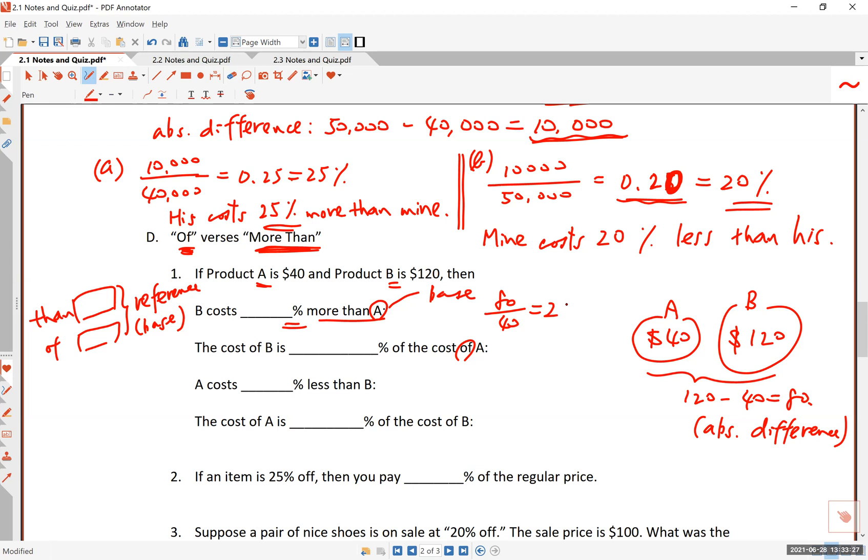What is 2? Well, remember 2 is equal to 200%, right? 0.5 is equal to 50%. So to go from here to here, you multiply that 2 by 100. And that's 200%. So you can say B costs 200% more than A.